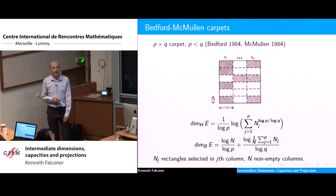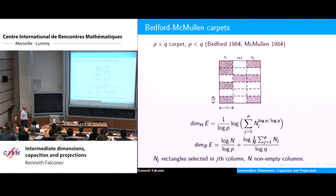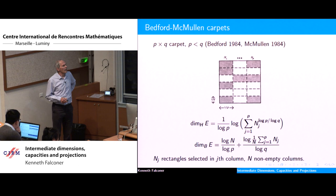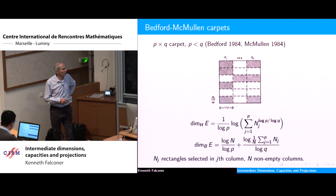For a P-by-Q carpet with P columns and Q rows, the box dimension is given by this formula. Capital N is the number of non-empty columns, and N_j is the number of rectangles selected in the j-th column. Both the lower and upper box dimensions are equal. A little harder is the Hausdorff dimension, given by a separate formula involving N_j. Unless N_j is the same for all non-empty columns, these two values are strictly different, giving a situation where box dimension and Hausdorff dimension differ.